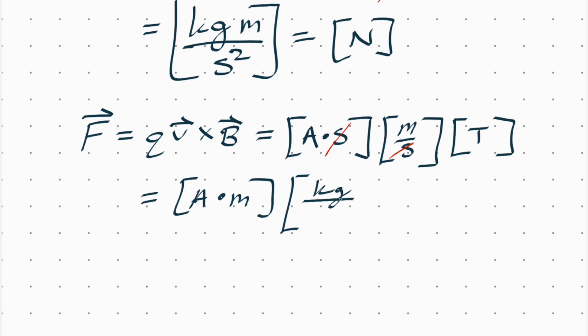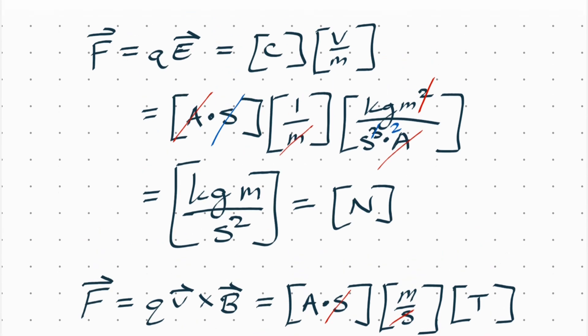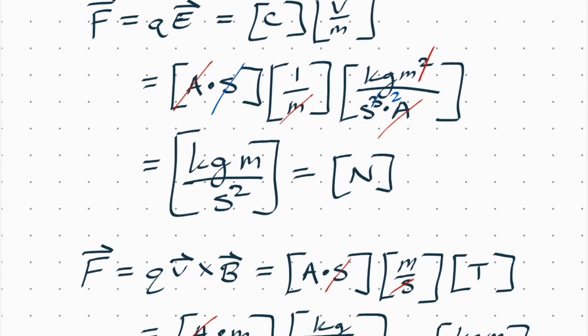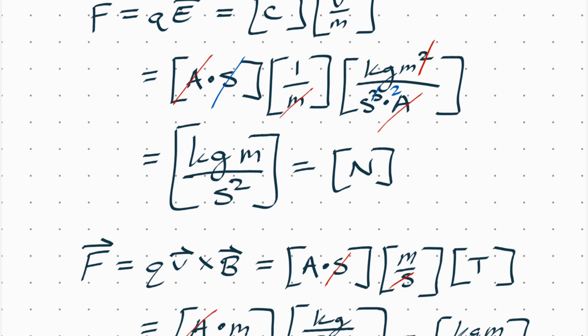A tesla is another derived unit: kilogram per second squared times amps in the denominator. The amps cancel, and you get kilograms times meters per second squared — units of newtons, as before. The reason I did this dimensional analysis is that in the upcoming example I won't write units, but everything is in proper SI units: coulombs, volts per meter, teslas, and meters per second.